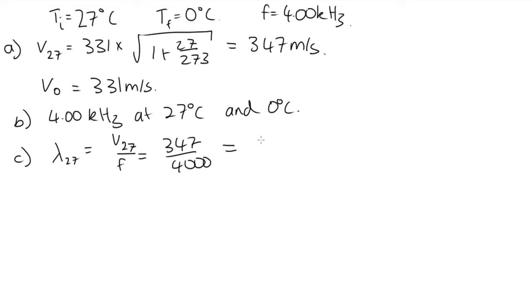That gives us 0.087 meters. At 0 degrees, it's equal to 331 over 4,000, which gives us 0.083 meters.